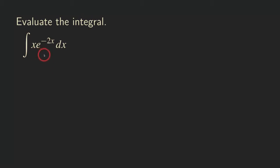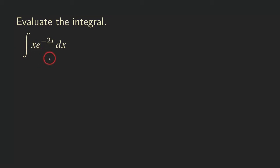To integrate this one, we cannot just directly integrate this product. We cannot just integrate the x and the e to the negative 2x separately and then put the product together — it doesn't work that way. So, to reverse the product rule, we would use integration by parts.